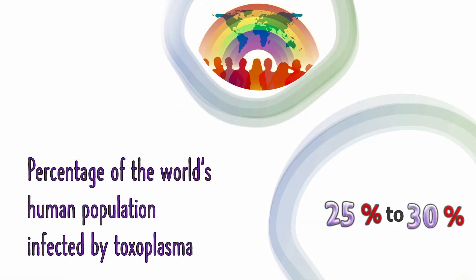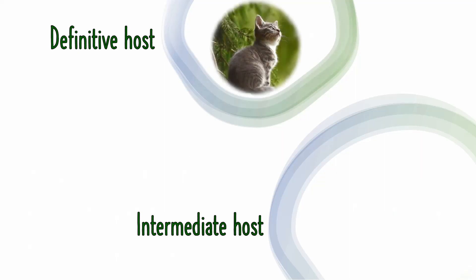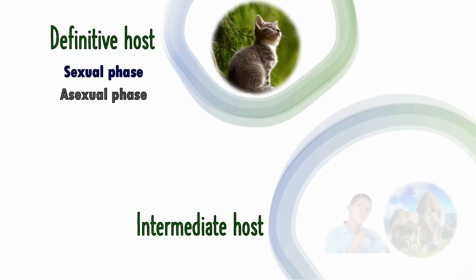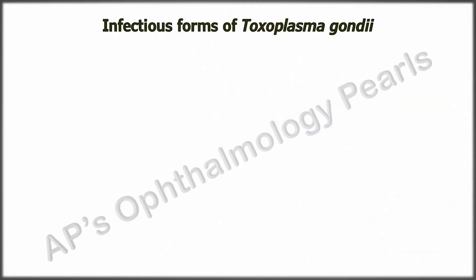Ocular toxoplasmosis is one of the most common causes of posterior uveitis, caused by an intracellular parasite. The definitive host for Toxoplasma gondii is the cat, in which both the sexual and asexual phases occur, while humans and most warm-blooded animals serve as intermediate hosts where only the asexual phase occurs.